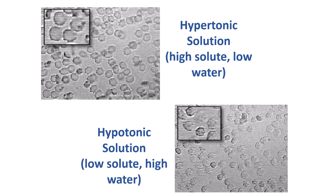Here are some real cells shown in electron microscope pictures. In a hypertonic solution, the solution has a high solute concentration, so water is trying to leave those cells. In a hypotonic solution there's a low solute concentration and high water concentration, so cells swell up — and some have actually broken open, undergone lysis, as you can see in the images.